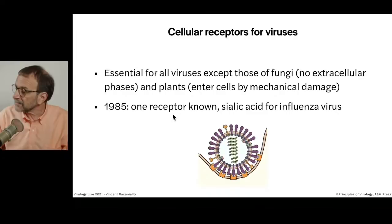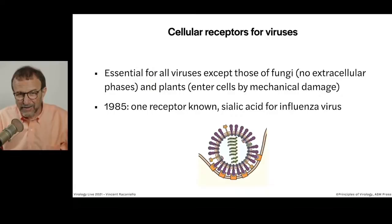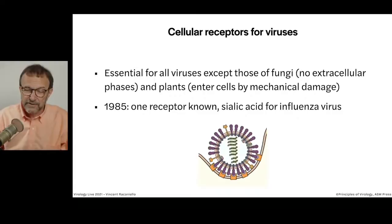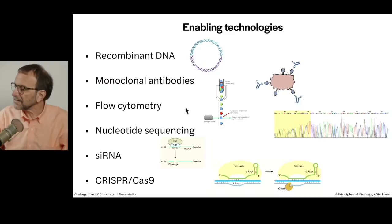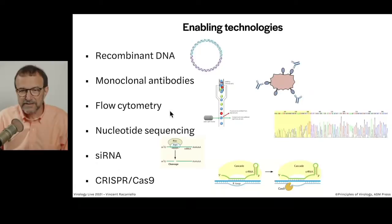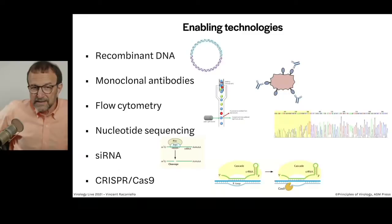The whole field of receptor biology is quite new. In 1985, when the field begins to grow, we only knew one receptor for a virus, and that is sialic acid, which is a sugar. But then in 1985, many new virus receptors began to be discovered. Why? Because of technology — technology drives a field. Here we have a list of enabling technologies that enabled the identification of receptors for viruses.